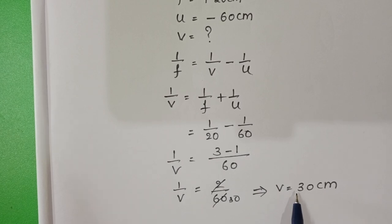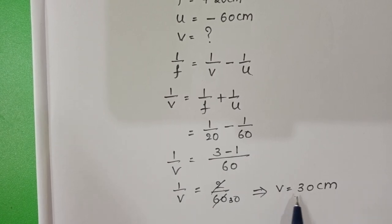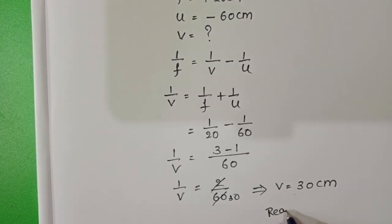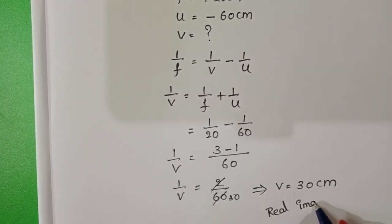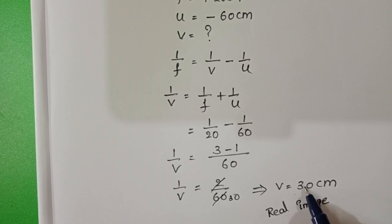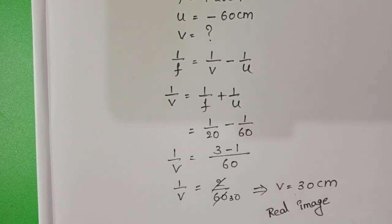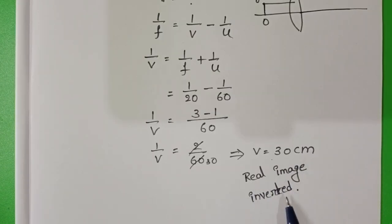Here we get a plus sign. In lenses, when we get the plus sign for image distance, for real images, image distance is positive. This is a real image, inverted image.